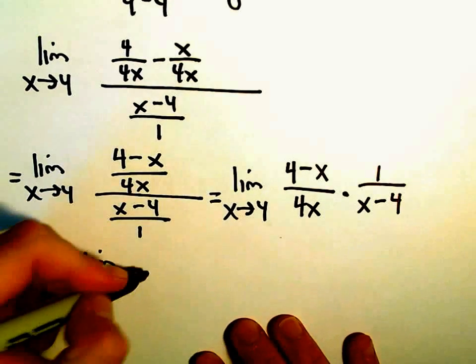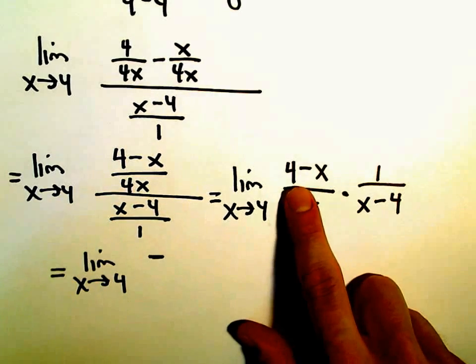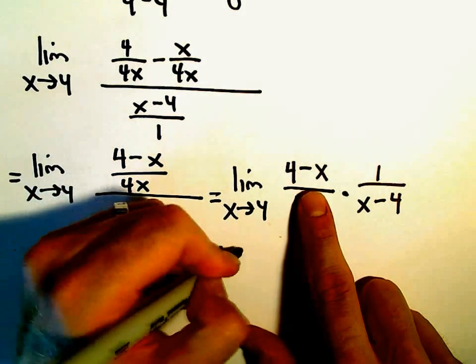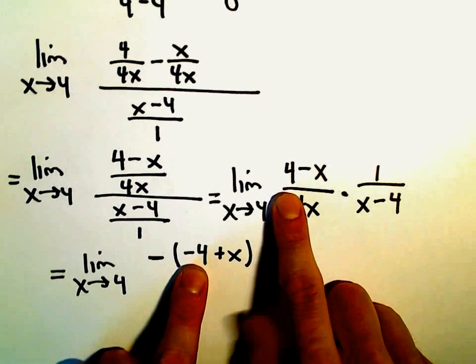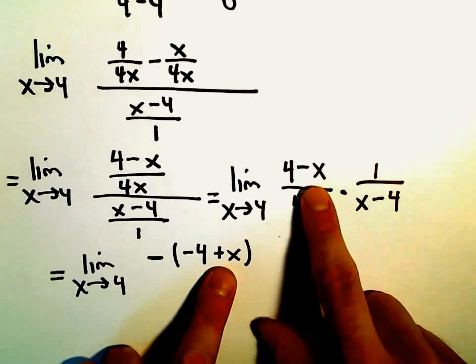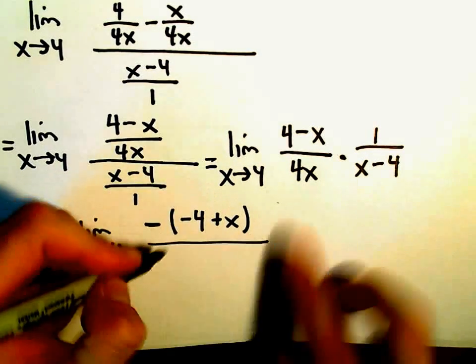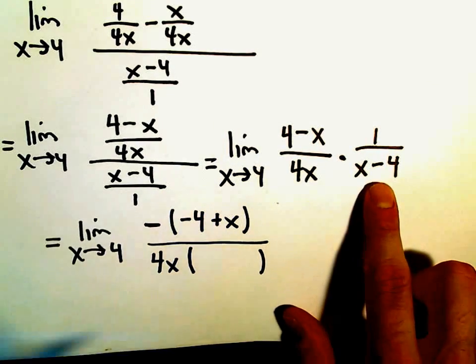It doesn't matter. I think I'm just going to take it out of the numerator. So if I factor a negative out of the numerator, well, I would need a negative 4 and a positive x. Because if I distribute, we'll get our positive 4 back. And if I distribute, we'll get our negative x also back. Well, again, in the denominator, we've still got our 4x. We've got x minus 4.